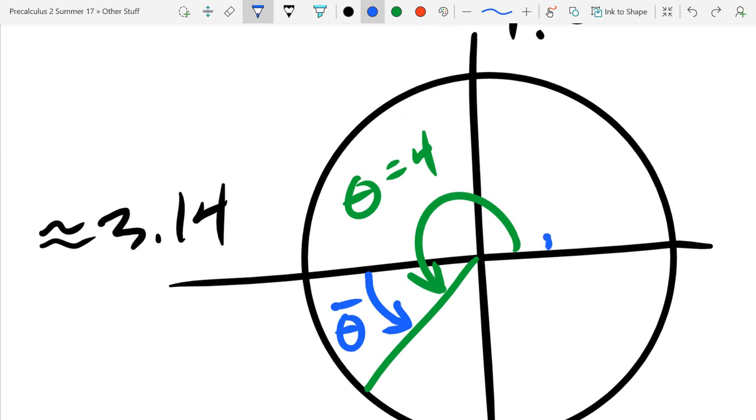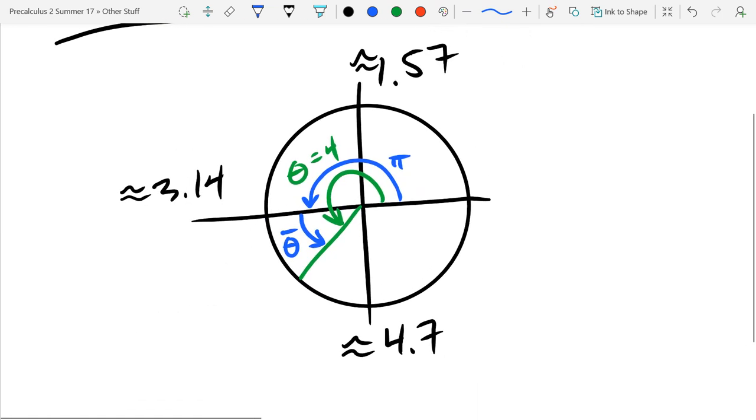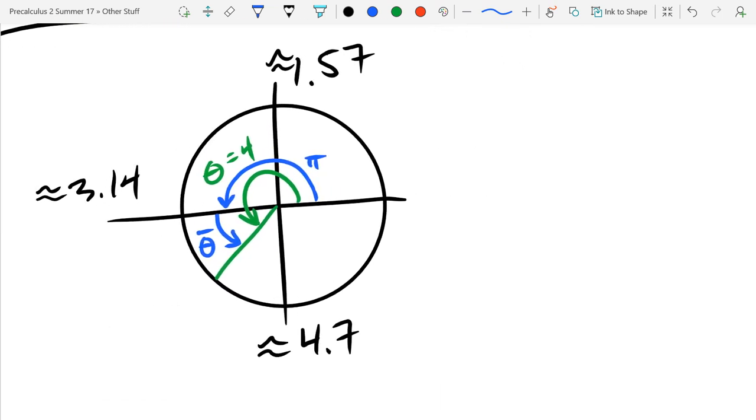I'll go with blue. This is probably the most intuitive way, at least for me. That's π. So if I do π plus θ̄, I get θ.